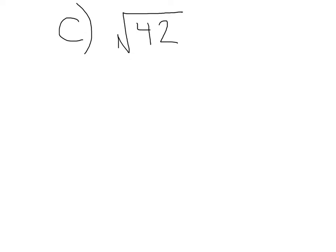Let's try the square root of 42. This can be broken into 7 times 6. 6 can be broken into 3 times 2. Alright, nothing else to break down, let's look for our pairs. Well 7 has no pair, 3 has no pair, and 2 has no pair.